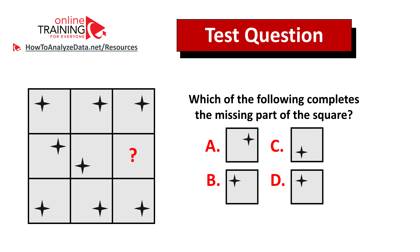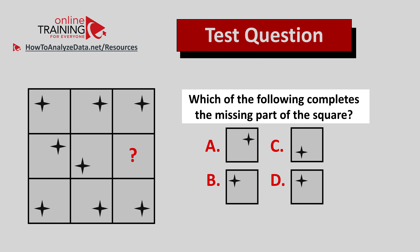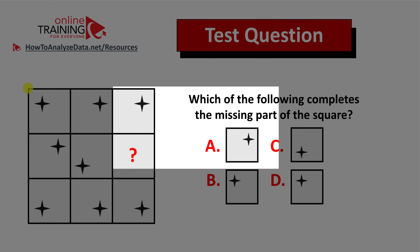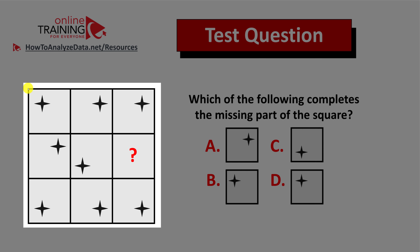Let me share with you a tricky question from the test. Somehow, though, I have confidence that you might figure out the answer. Here's the question: which of the following completes the missing part of the square? You have a 3x3 square which consists of smaller squares. Each small square has a star, and all stars are in different corners.